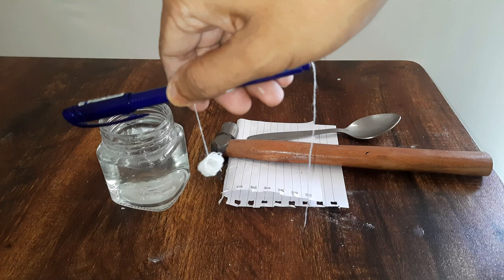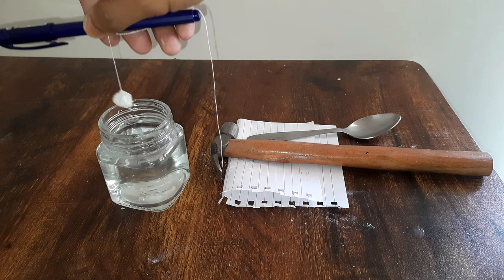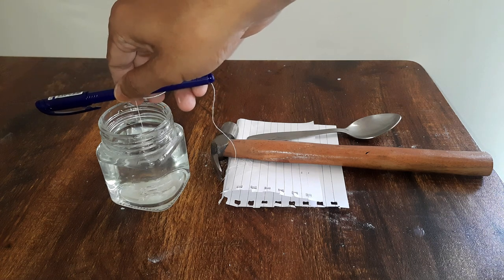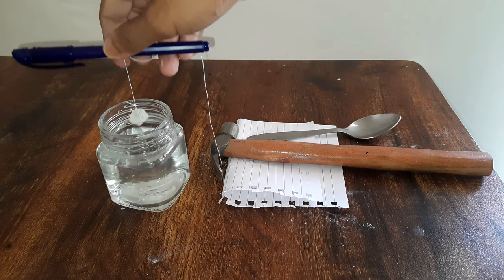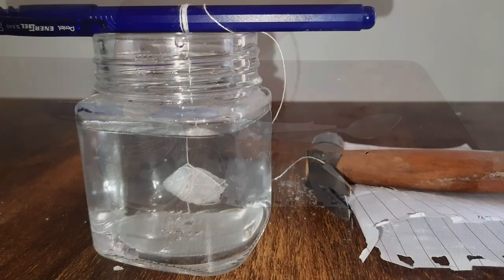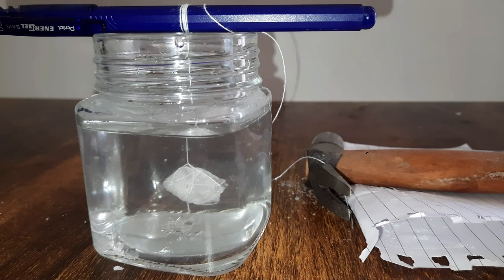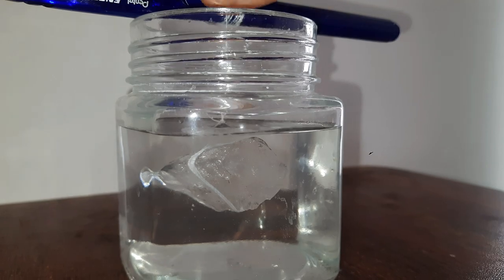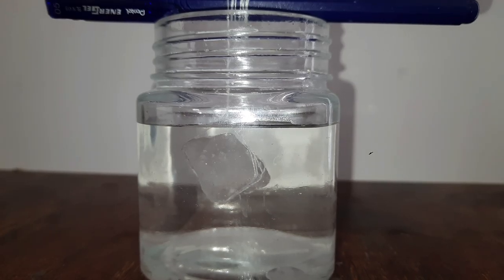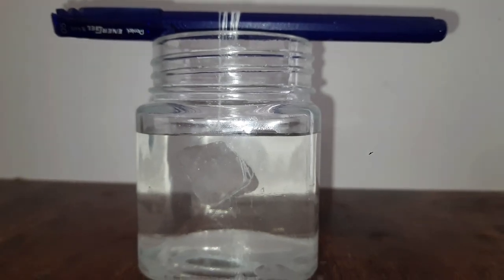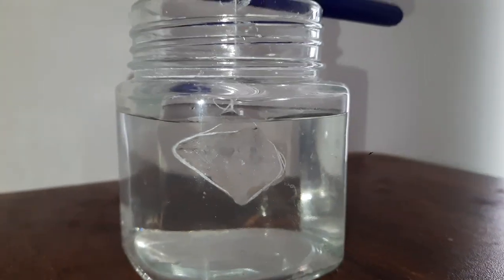Now we will take one alum crystal, tie it with a string, and tie the other end of the string with the pen. Then hang the crystal into the water like this. Make sure the crystal does not touch the base of the glass jar. We will keep it like this for at least four to five days. Now after four to five days, let's see what happens. Look at the size of the crystal, hasn't it grown bigger? The size of the crystal has increased.